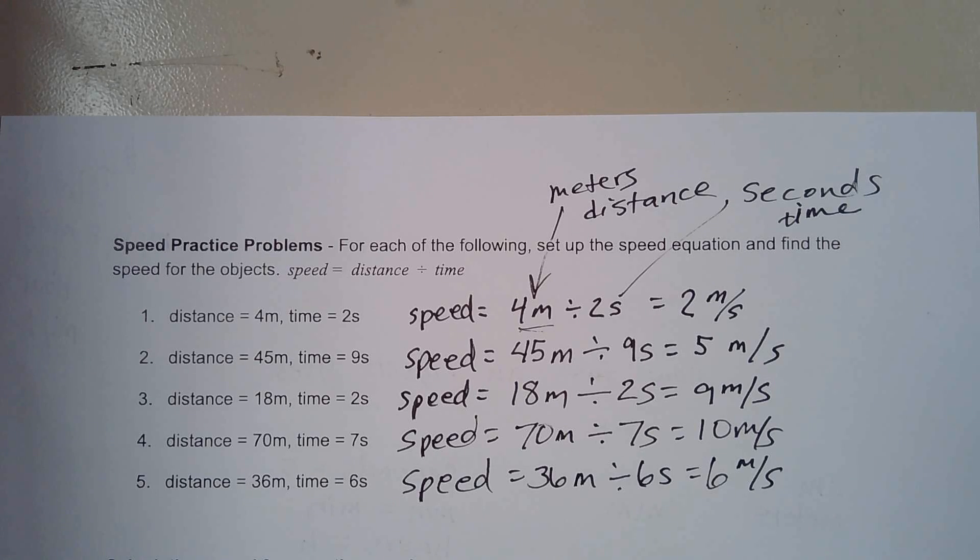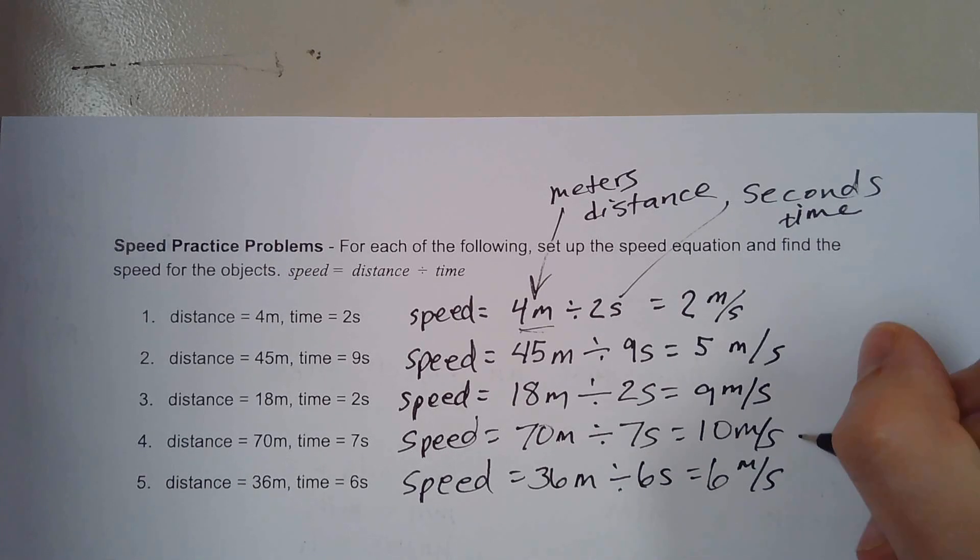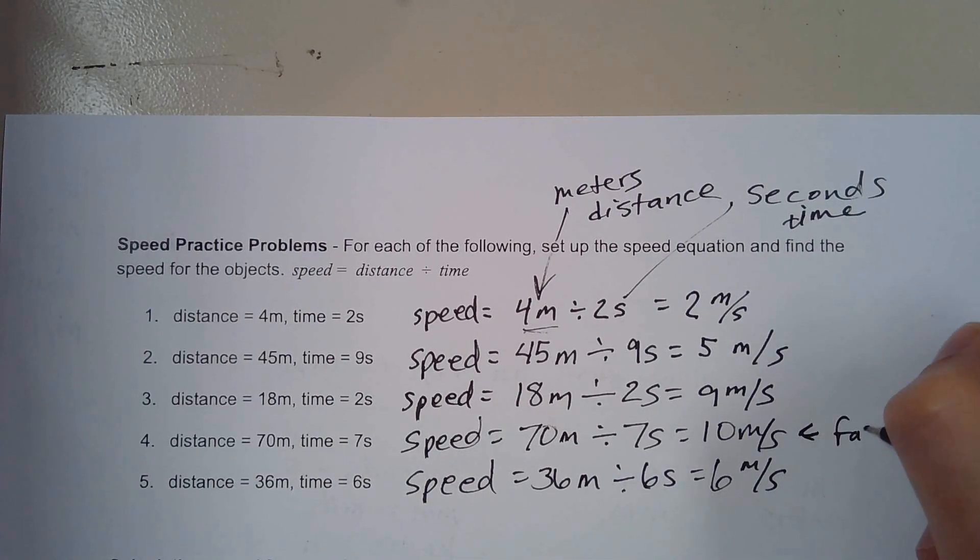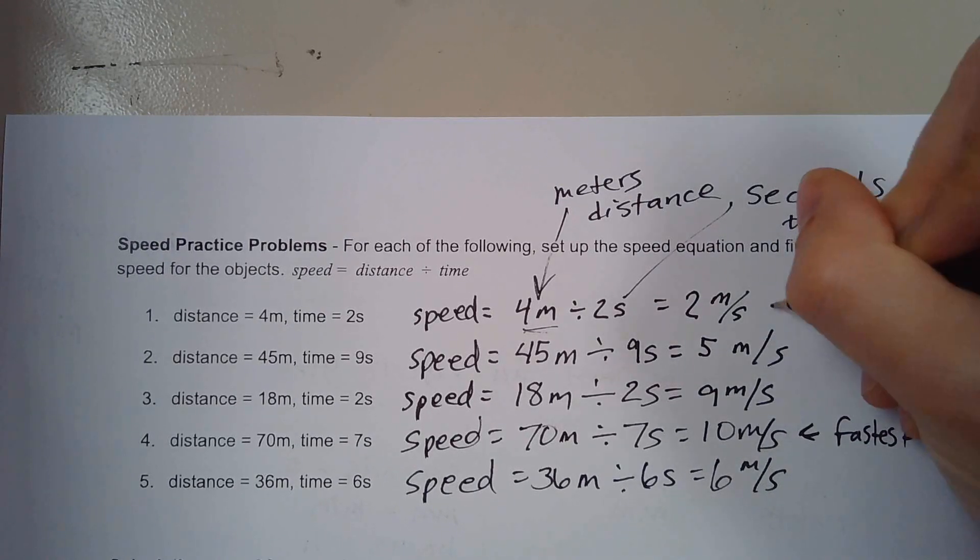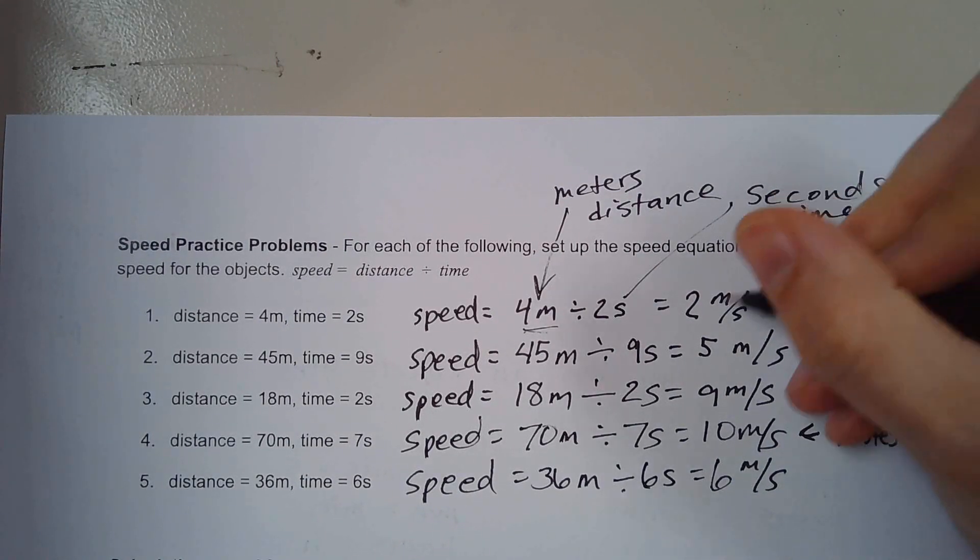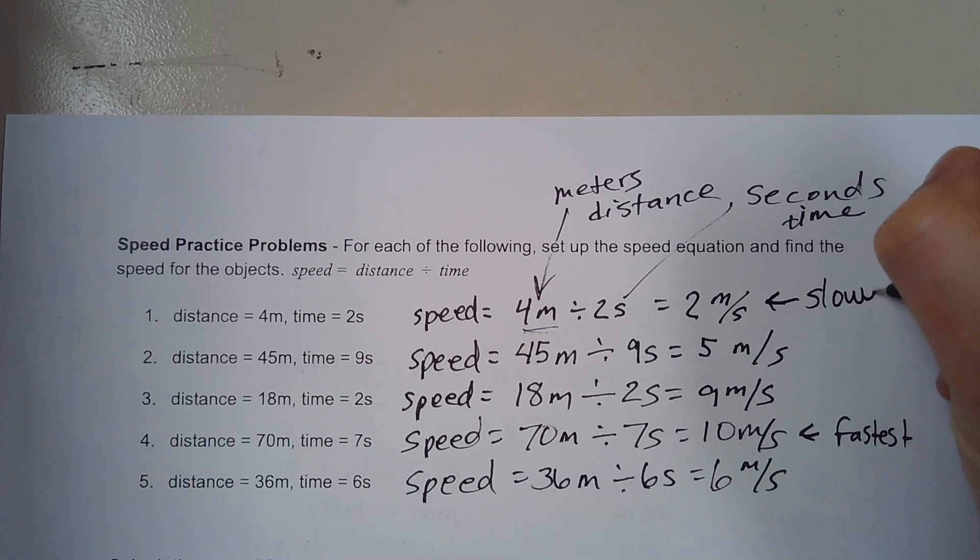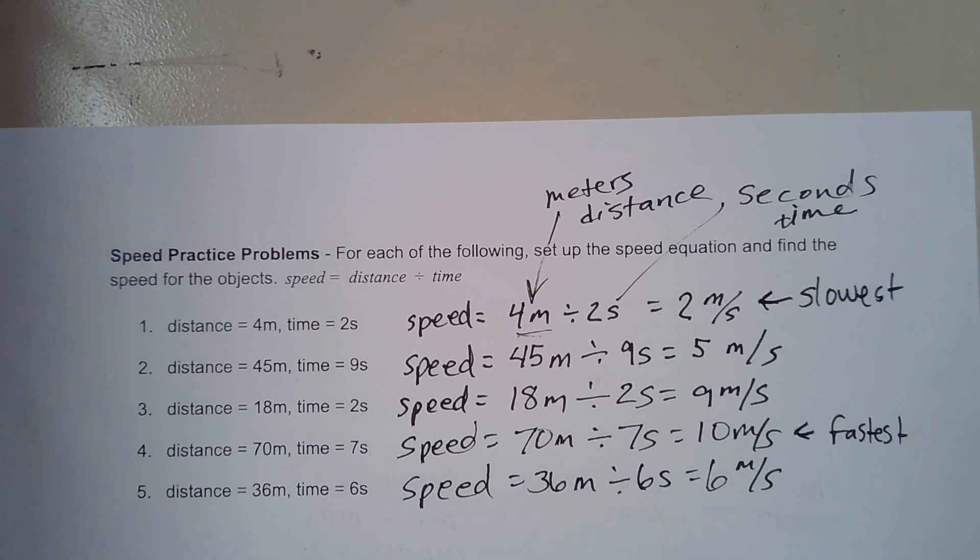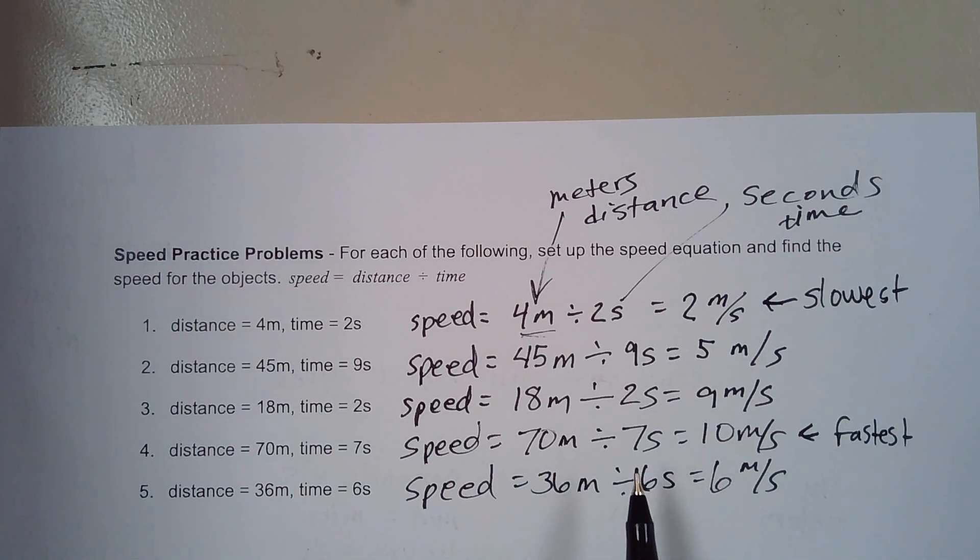Now if I asked you which of these things is going the fastest, because that's something we'll talk about, like which objects are going faster or slower, the one with the bigger speed is going the fastest. The one with the slowest, the lowest number is going the slowest.